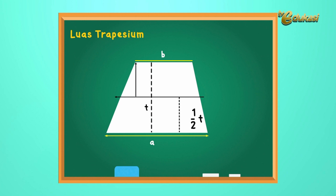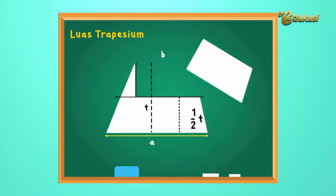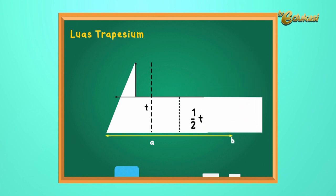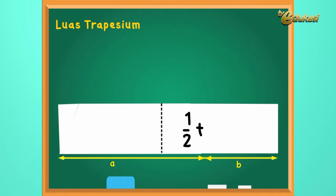Perhatikan baik-baik. Perhatikan potongan trapezium yang ini, anak-anak. Bapak pindahkan potongan yang ini ke sebelah kanan. Kemudian, Bapak pindahkan potongan yang berbentuk segitiga ke sebelah kiri. Bentuk apa yang diperoleh? Ya, betul, persegi panjang. Panjangnya A tambah B, dan lebarnya setengah T.